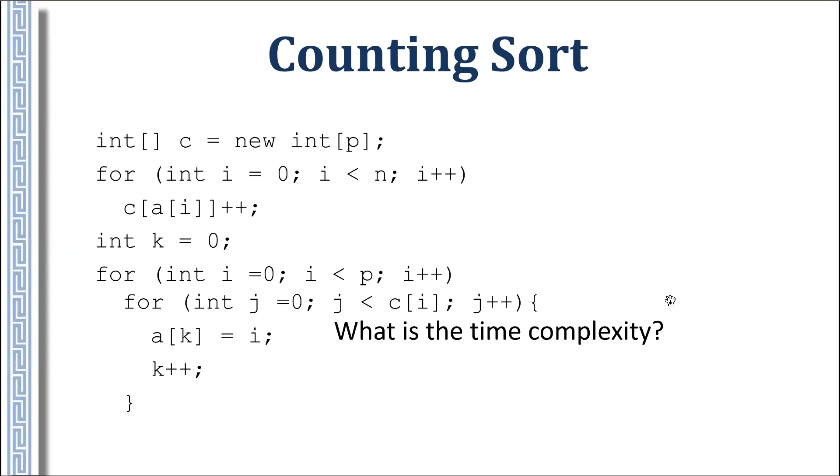What about time complexity? We can count it. The first for loop does n steps. The second for loop does p steps. This for loop does c[i] steps. But the maximum number for c[i] is n, and that's why we can say it is p times n. Total pn. In fact, it is very rough estimation. We can do it better.